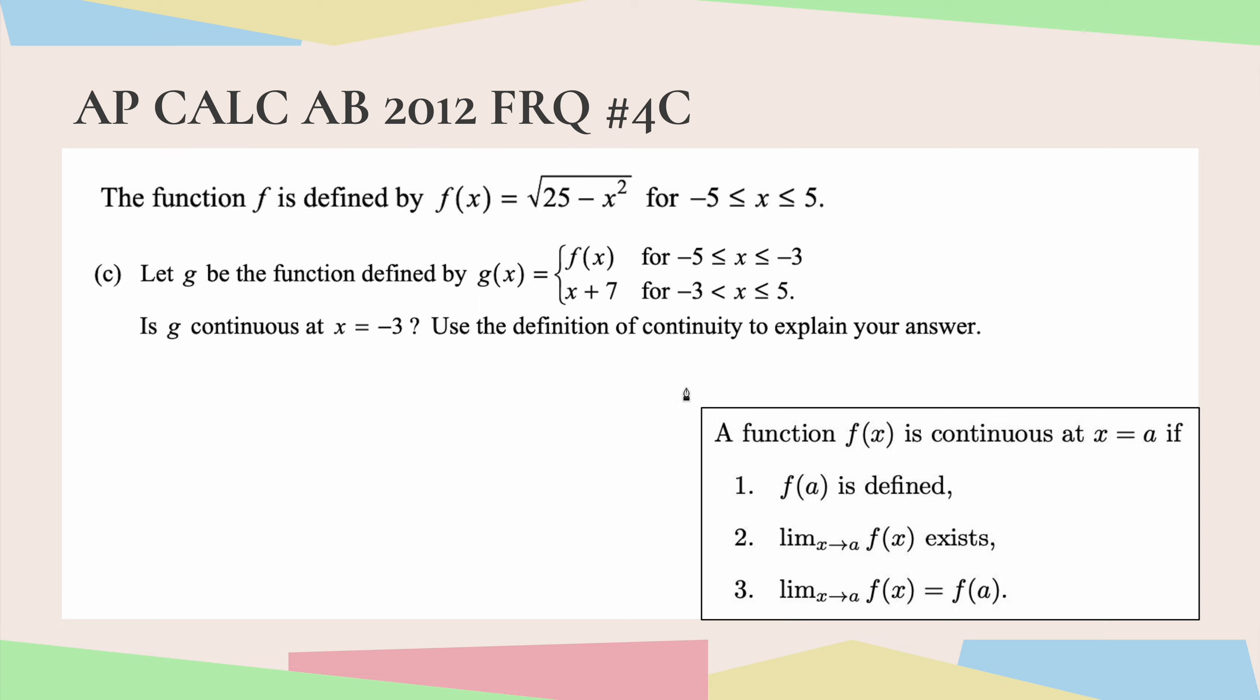First is f of a defined. So is our function, in this case it's actually g that we're looking at, so we're going to see is g of negative 3 defined. We're going to go over here to our requirements and it looks like when x is negative 3 we would be using f of x, and if we go up here to this function, negative 3 is well within this interval, so this would be defined. Yes it is defined and let's figure out what exactly it is. We're going to be using our f of x.